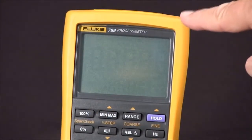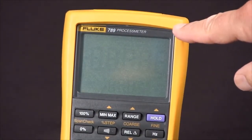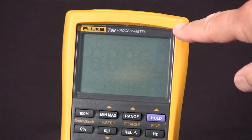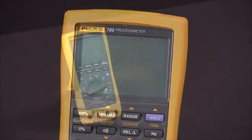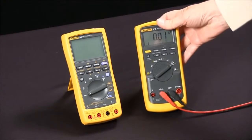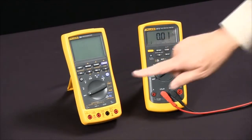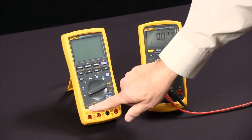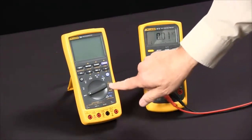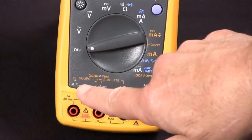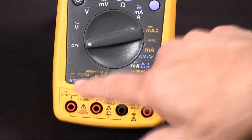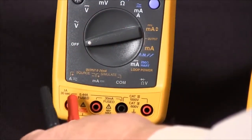To source 4 to 20 milliamps DC current with our Fluke 789 process meter, we're going to use a digital multimeter to measure the current that we're sourcing. You'll notice everything that has to do with sourcing is in orange. We're going to come over here to the source plus and minus output and attach our meter.